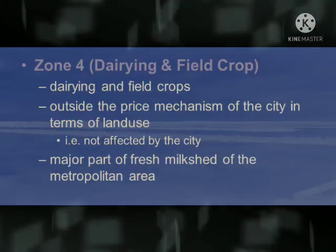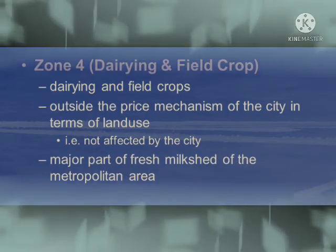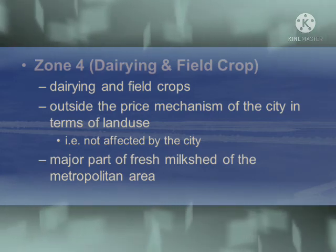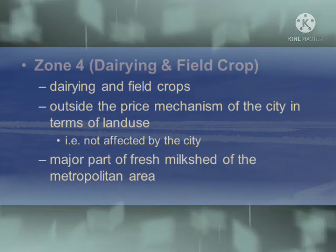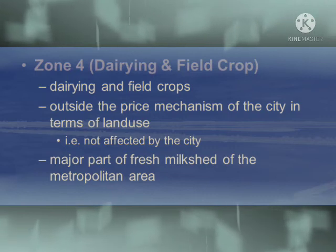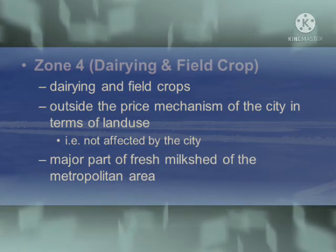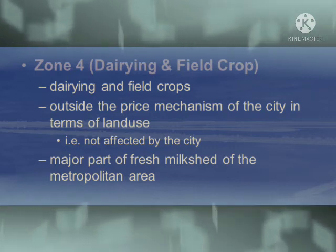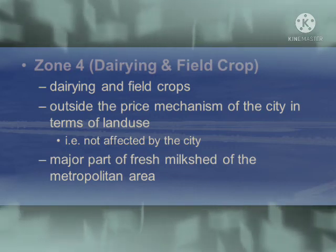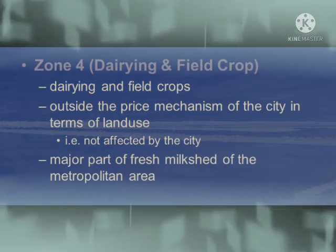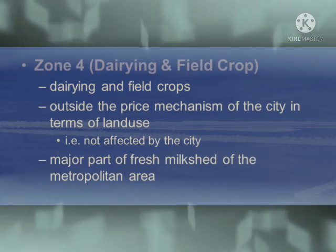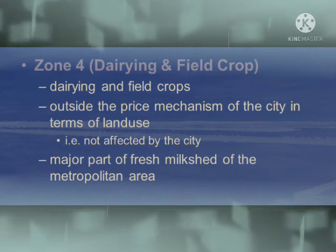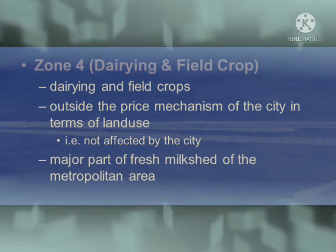Zone four is dairying and field crop. This zone lies outside the price mechanism of the city in terms of land use and forms the major part of the fresh milk shed of the metropolitan area. These are the main features of zone four.